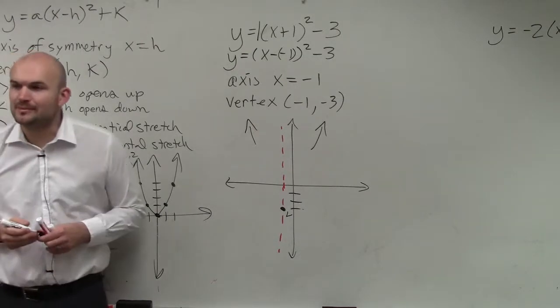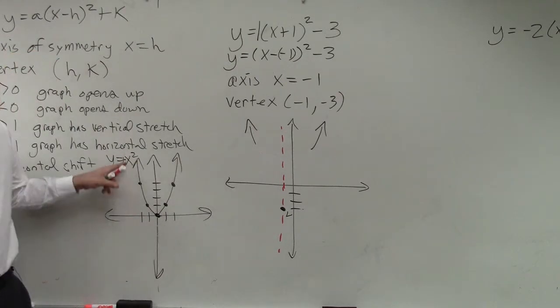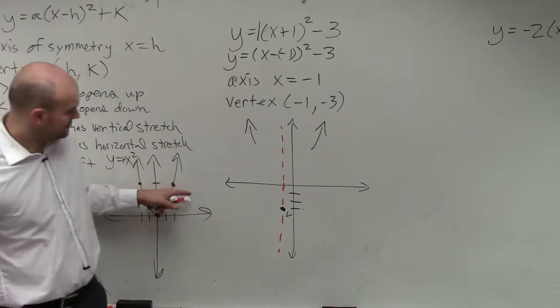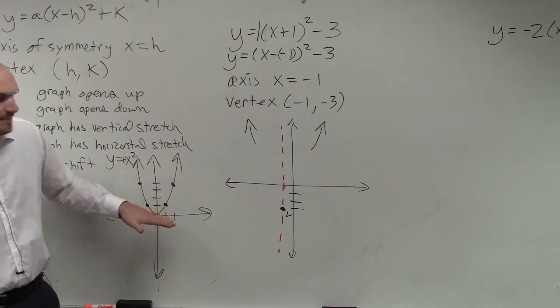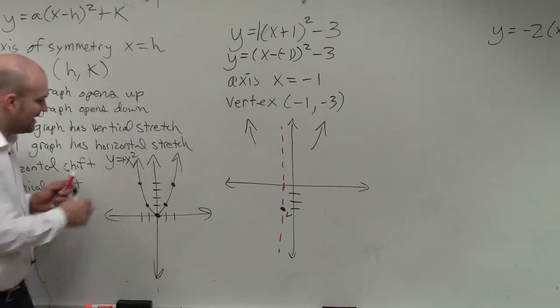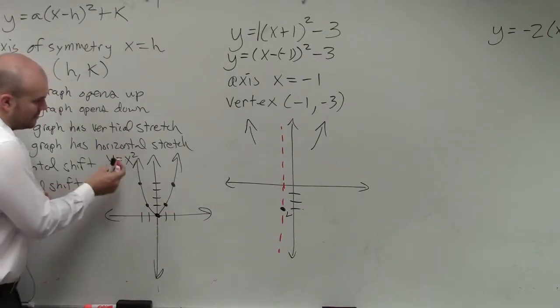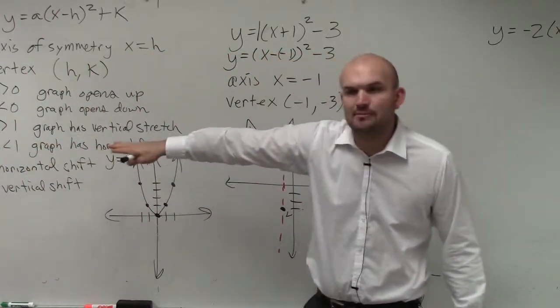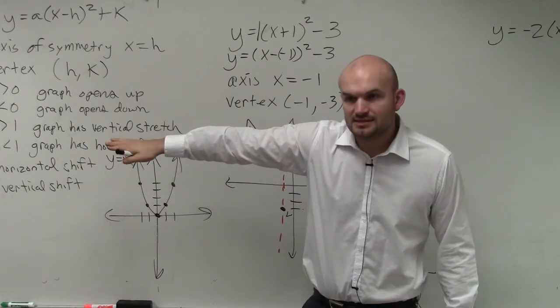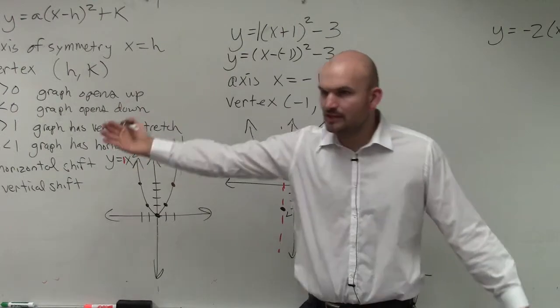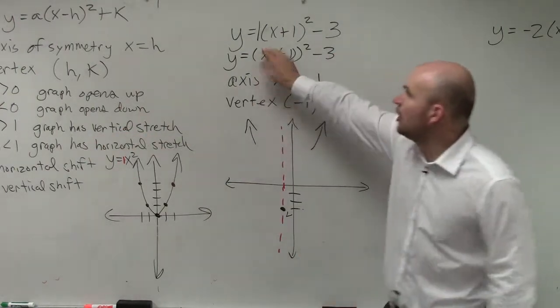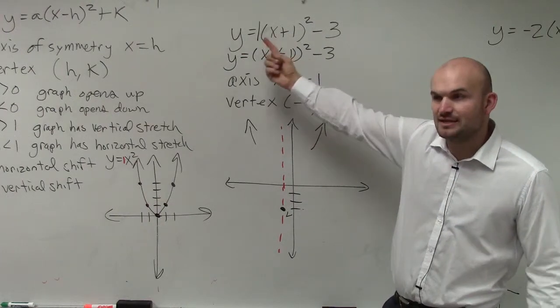So I'm going to give you guys a tip. This is the parent graph y equals x squared. What I want you guys to understand about this is, remember in the last one, to find the other points, we had to use a table, right? You had to plug in the table. You had to plug in points to find the table. What's nice about this is as long as you know that it is in standard form that your A is equal to 1, all I simply need to do is follow the same pattern.